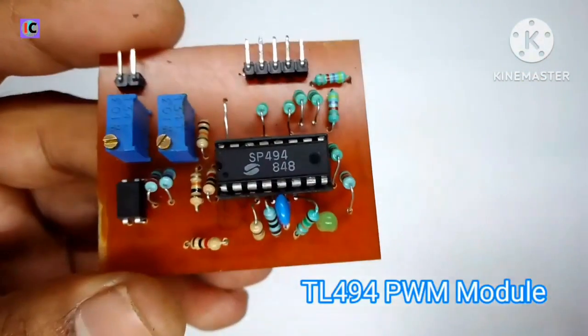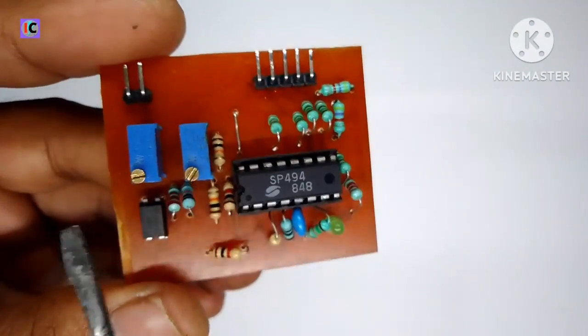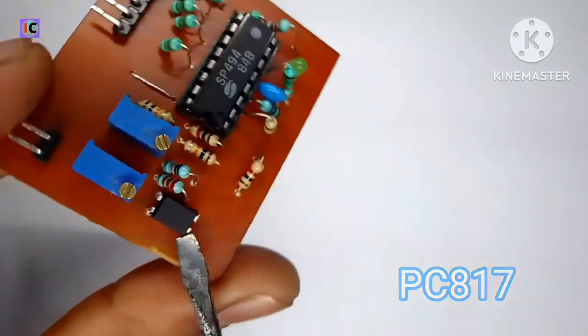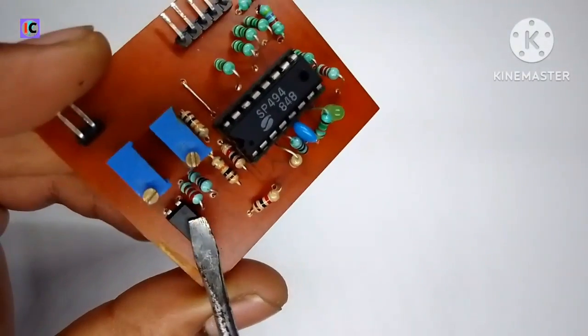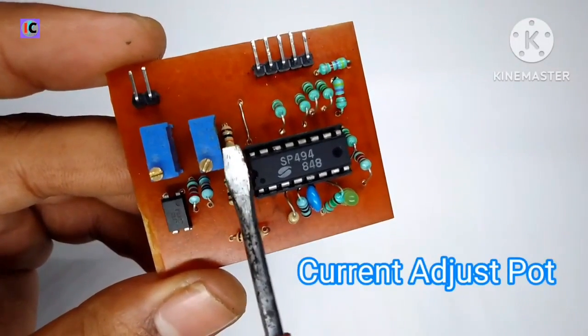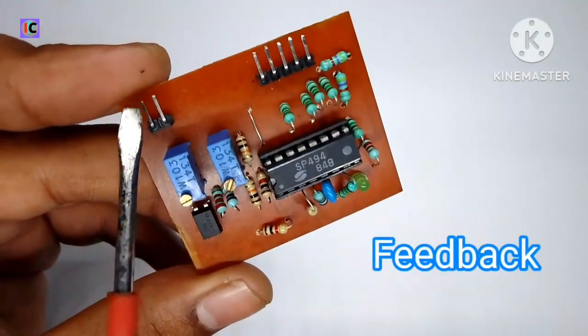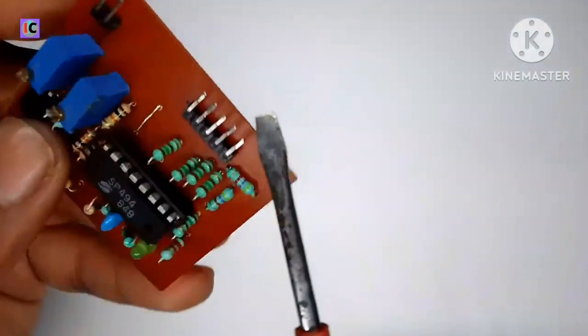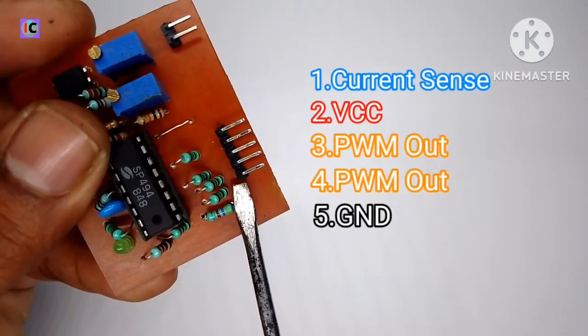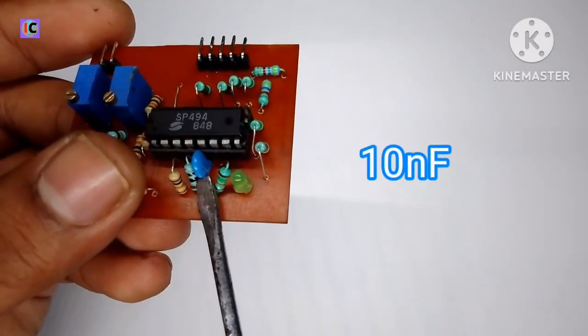Now in the next part, here I have a TL494, which is a PWM controller with a very small size. I'm using a PC817 optocoupler for the voltage feedback to correct the output voltage, and having two potentiometers for controlling the voltage and current. Here's the voltage feedback and pin-outs, the current sensing pin which will be used for adjusting the output current, and a 10 nanofarad capacitor for frequency adjustments.